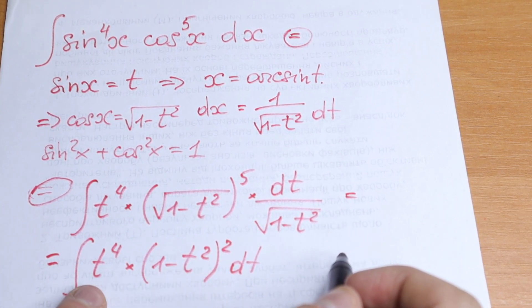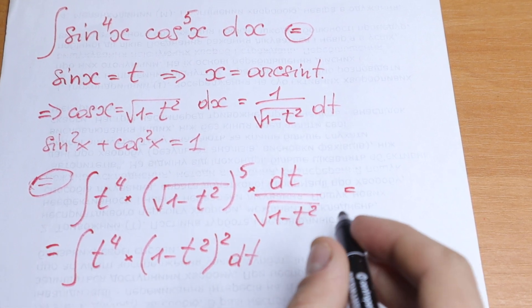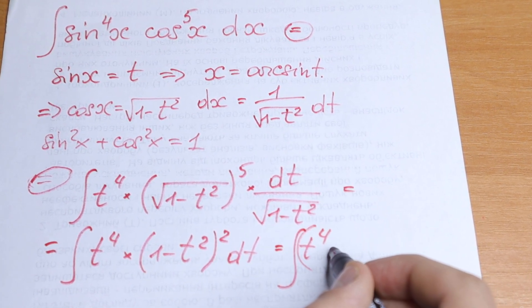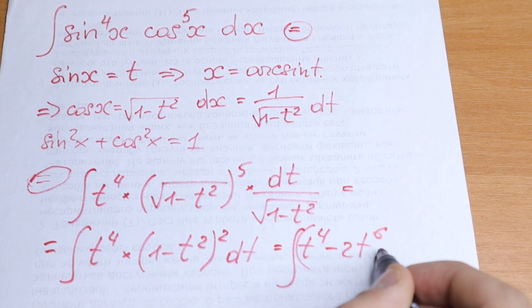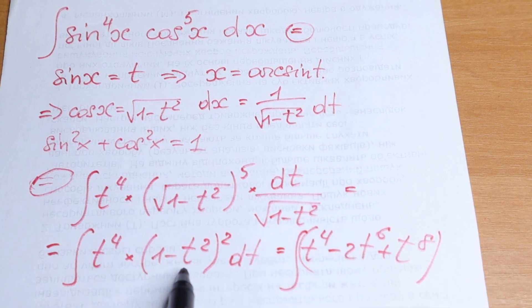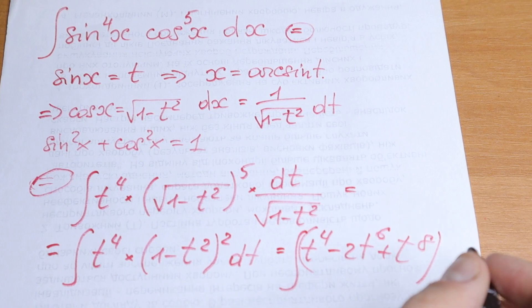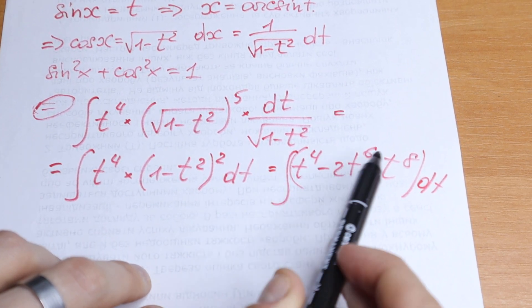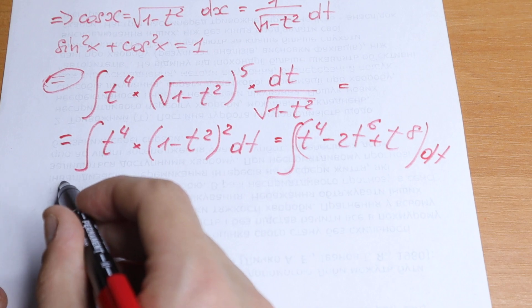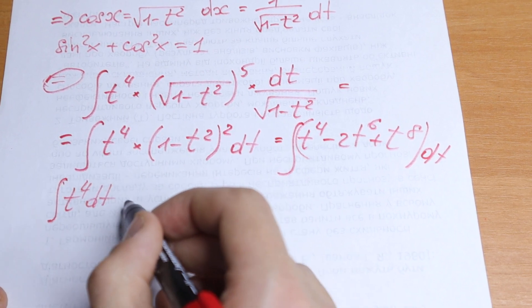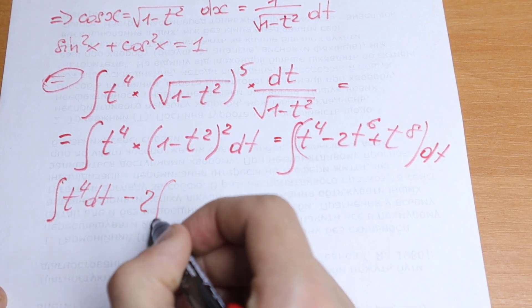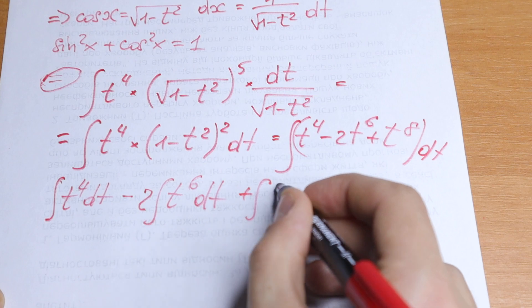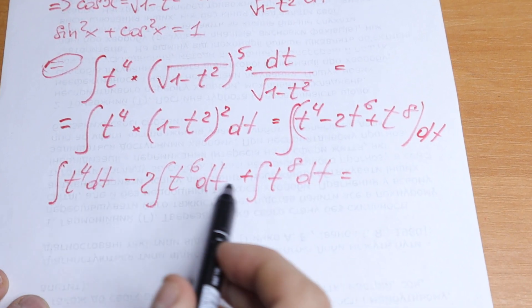We can easily expand 1 minus t squared to the second power and multiply by t to the fourth power. As a result, we get the integral of t to the fourth power times the quantity 1 minus 2t squared plus t to the fourth power. Splitting this up: integral of t to the fourth power dt, minus 2 times the integral of t to the sixth power dt, plus the integral of t to the eighth power dt.